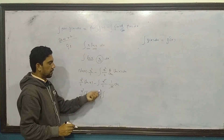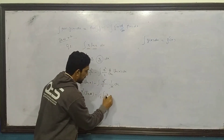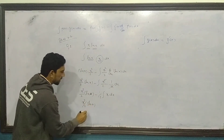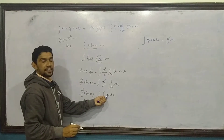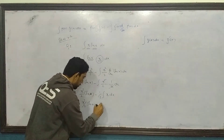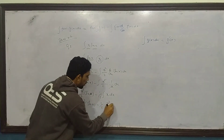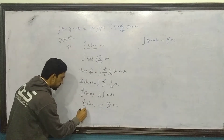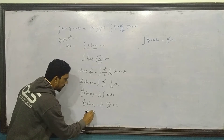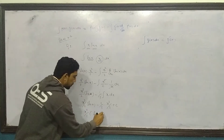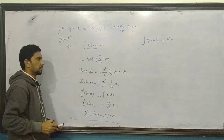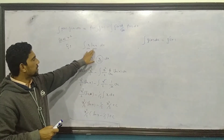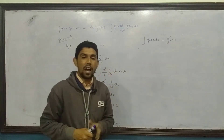Toh aa gaya: x squared over 2 times log of x, minus 1/2 (2 bahar aa gaya), aur ek x cancel ho gaya, bacha x dx. x ki integration hai x squared over 2. Toh answer hai x squared over 2 log of x minus 1/2 times x squared over 2, plus constant. Simplify karne par: x squared over 2 (log of x minus 1/2) plus constant.